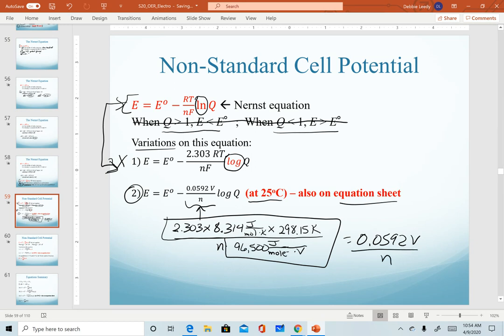And so that's still divided by the letter n. So for any given reaction that is run specifically at 25 degrees Celsius, you can use this to calculate your non-standard cell potential from your standard cell potential.